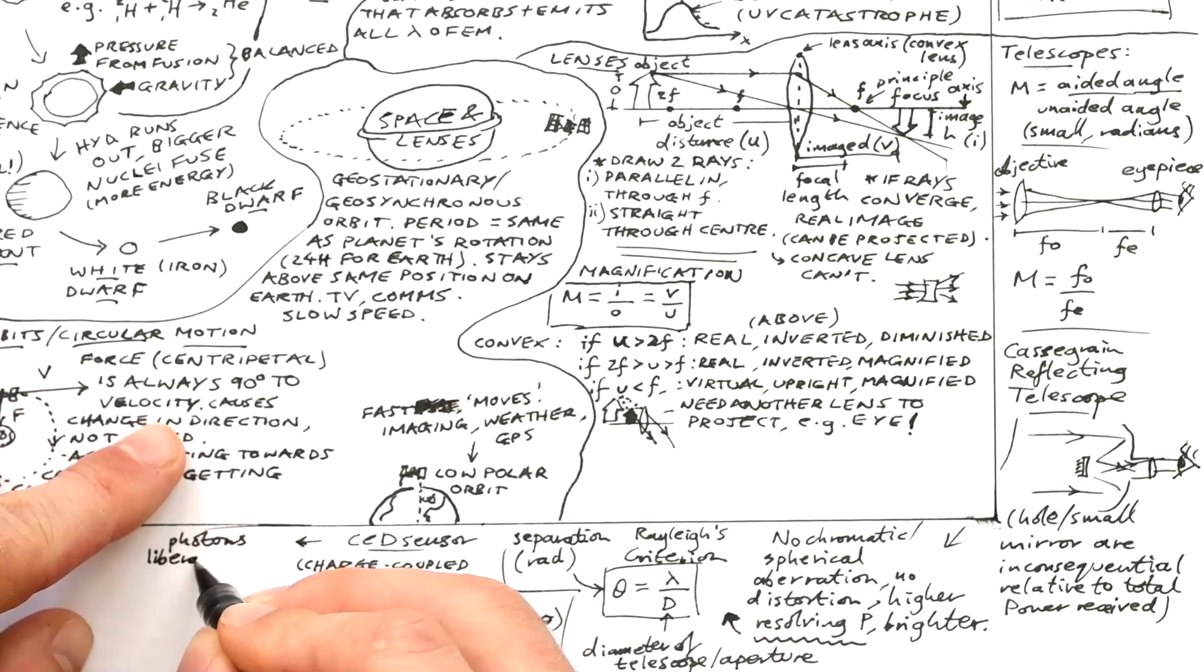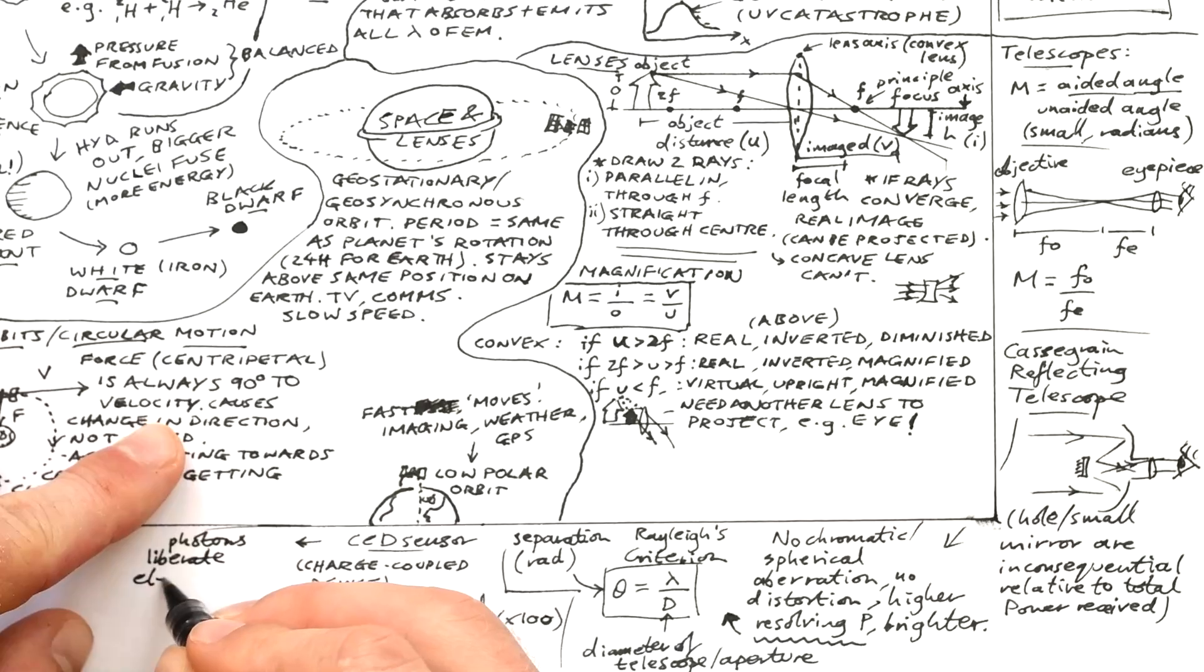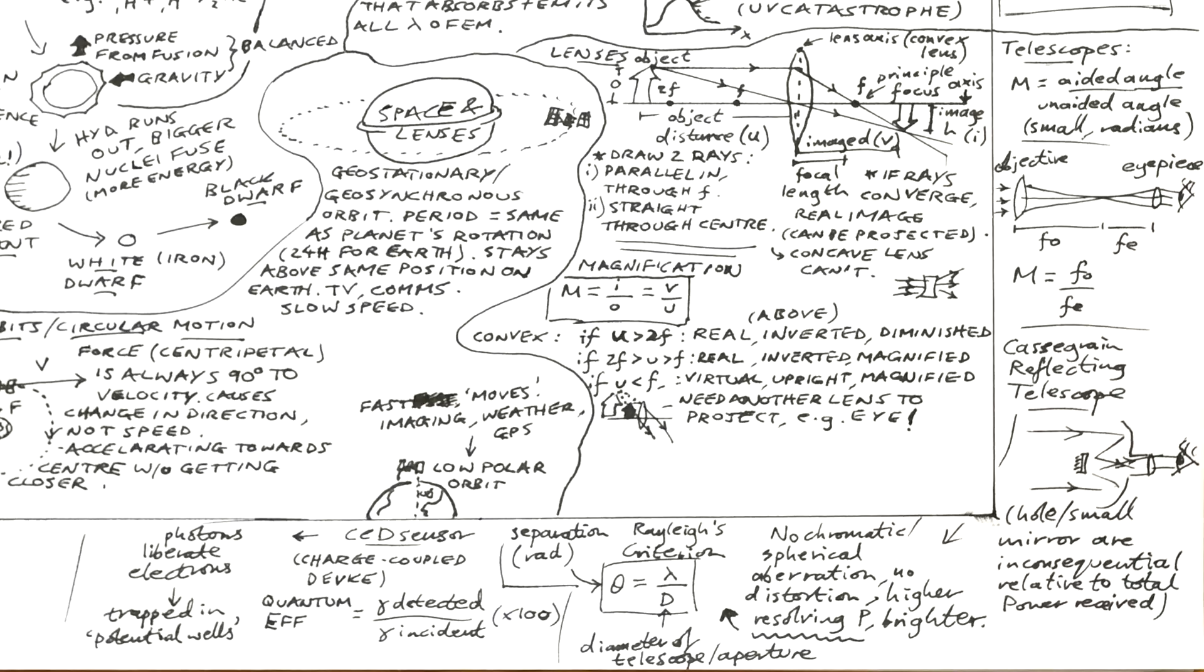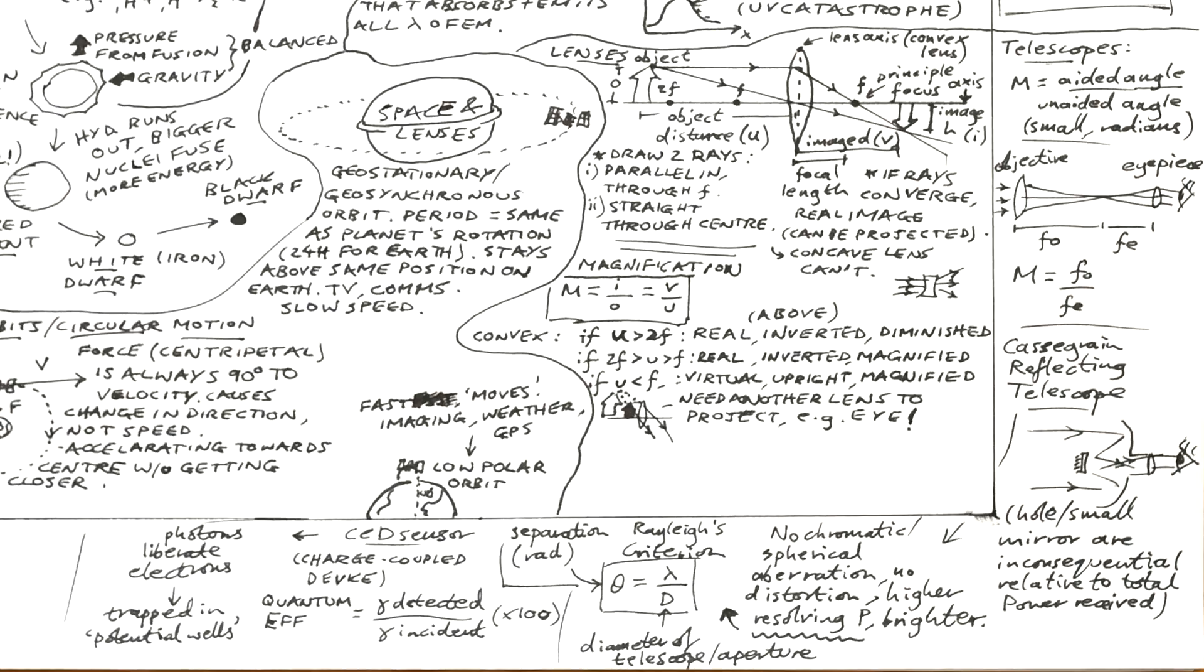With the CCD we have photons going in and we have the photoelectric effect. Electrons will absorb the photons and be liberated. And the more electrons that are liberated from a pixel in a CCD the more light we know is going into it. And these electrons get trapped in a potential well. And then we can measure this and then build up a picture.